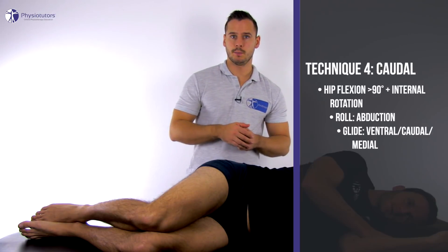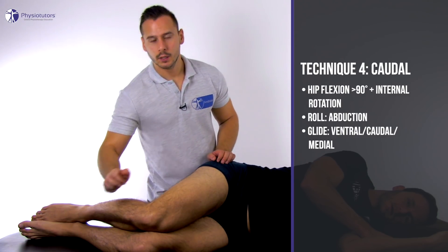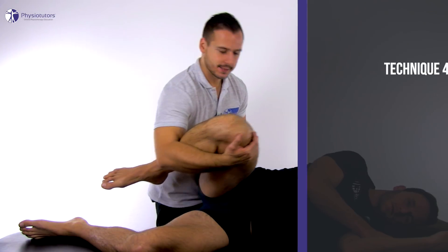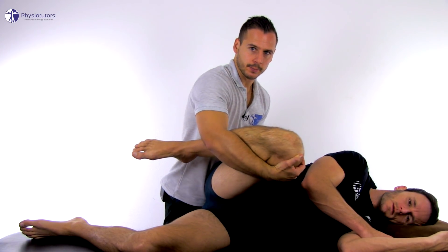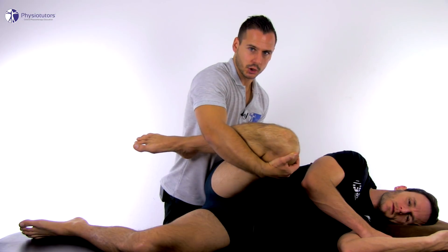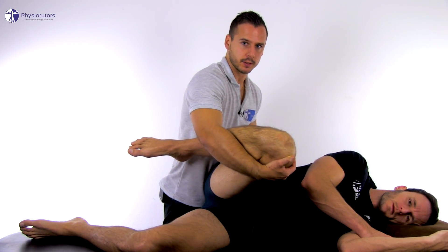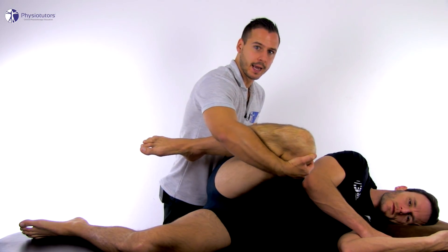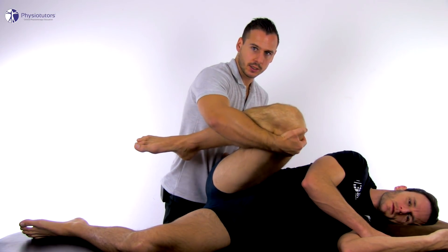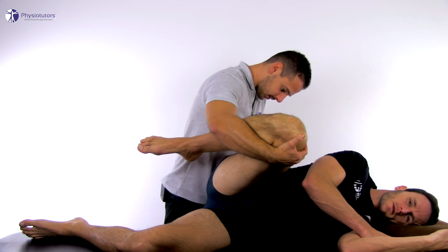To accentuate the caudal portion of the capsule, the patient is again in side-lying position. First and foremost, flex the hip beyond 90 degrees and make sure you can preposition the hip in internal rotation — this will tension the pubofemoral ligament. From there, induce the roll by performing abduction and add the glide in ventral, caudal and medial direction.